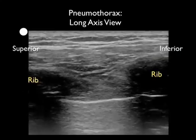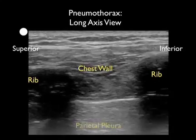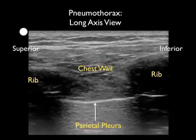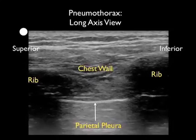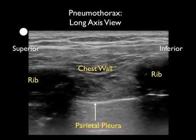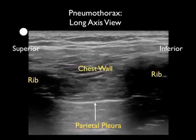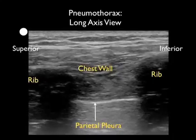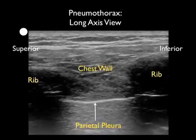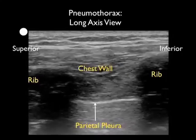Here's another image of a pneumothorax in a long axis configuration. We see here the chest wall anteriorly and the single white line which is the parietal pleura. Now this patient was acutely dyspneic, so notice that there is some motion of the chest wall and that the parietal pleura moves up and down, but notice the failure of horizontal sliding. Notice also the absence of any vertical comet tails coming off the back of the pleura.